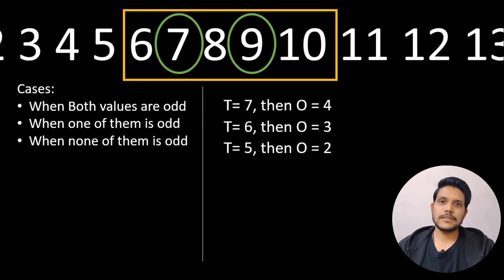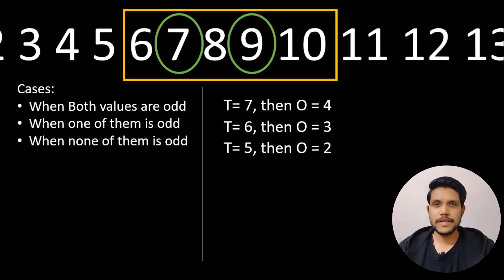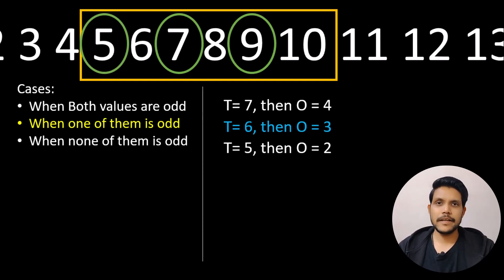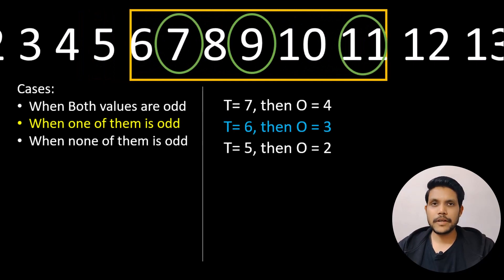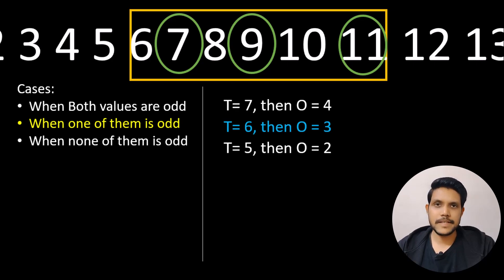Now let's discuss each case one by one. Starting with the case where one of the values is odd — if the low value starts from an odd value, the total number of values is 6 and the number of odd values is 3. The next sub-case is if the high value is odd and the low value is even — still the number of odd values in this range stays the same.